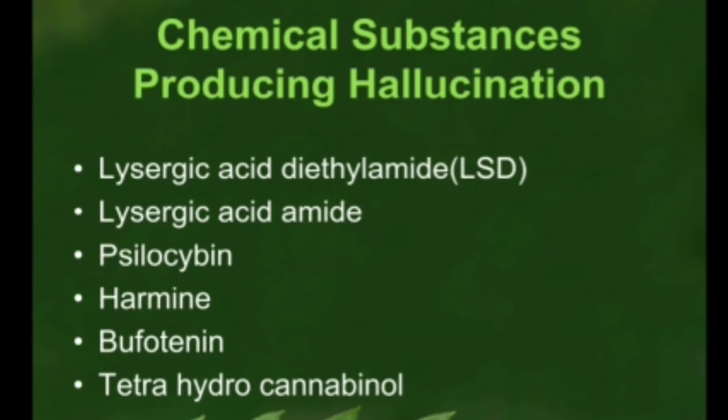Some of the chemical substances that produce hallucination include psilocybin, harmine, bufotenin, and tetrahydrocannabinol (THC). Tetrahydrocannabinol is highly present in the ganja plant, cannabis sativa, also called marijuana. Others include lysergic acid amide and lysergic acid diethylamide (LSD).